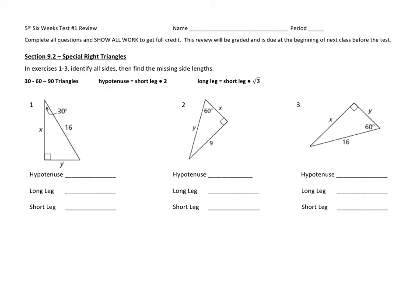We're going to start off with our special right triangles. The first is the 30-60-90. When I taught this lesson, I did it as a ratio where our three angle measures correlated to the different sides. The 30-degree angle relates to the short leg (SL), the 60-degree angle is opposite the long leg (LL), and the hypotenuse is always opposite the 90-degree angle. If the short leg equals X, then the long leg is X times the square root of 3.